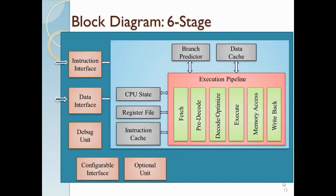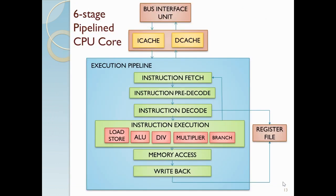So we proceeded to the six-stage pipeline. In the six-stage pipeline, we additionally added an instruction pre-decode stage. This instruction pre-decode is used to reduce the cycle time. In the five-stage pipeline, up to five instructions can be handled, but in the case of the six-stage pipeline, we can handle up to six instructions. In the execution unit, we additionally added a branch prediction unit and a divider.